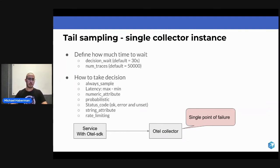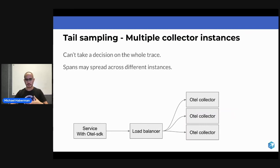We're talking about high scale. Single instance never scales. The problem here would be that if we are having multiple OpenTelemetry collectors, that means that we have a load balancer.